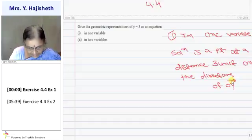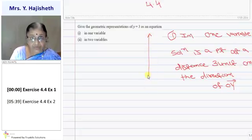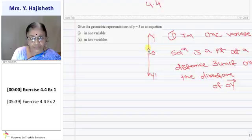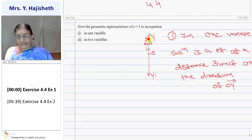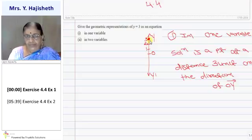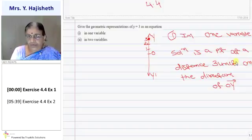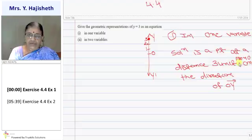If I draw a number line — this is your y-axis — the point is at a distance of 3 units from the origin in the direction of O-Y. So this represents my point (0, 3). In one variable, the solution is a point at a distance of 3 units from the origin in the direction of y.